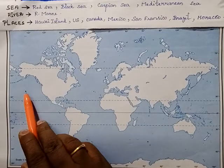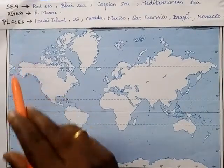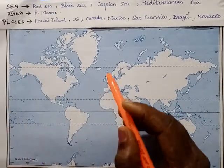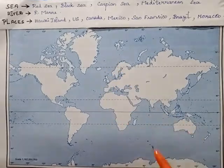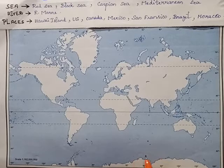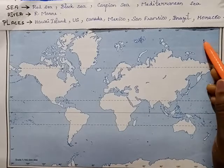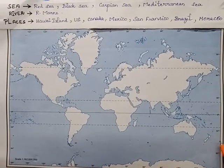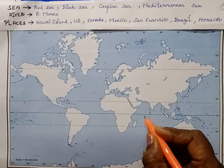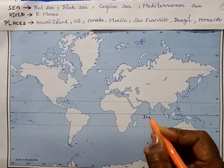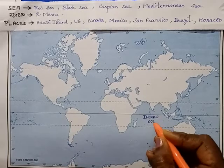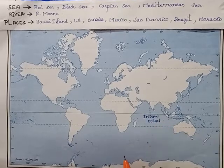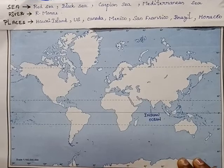Oceans recap: Pacific Ocean — North Pacific Ocean, South Pacific Ocean. Atlantic Ocean — North Atlantic Ocean, South Atlantic Ocean. And then Southern Ocean, also called Antarctica Ocean. And then Indian Ocean — just make a note of it, this is the Indian Ocean.